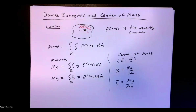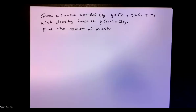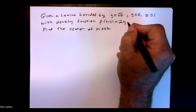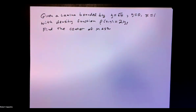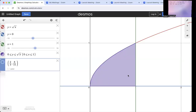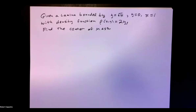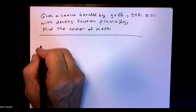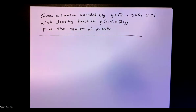Let's work through an example. Given a lamina bounded by y equals root x, y equals 0, and x equals 1, with density function rho of x, y equals 2y, our goal is to find the center of mass. The density is very low near the bottom and gets more dense as y increases — it gets heavier as the y values grow. We need to find the mass m, the moment M sub x, and the moment M sub y.